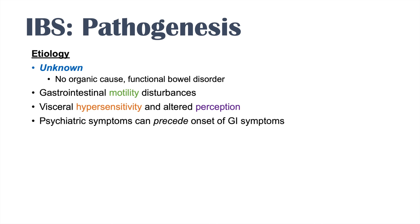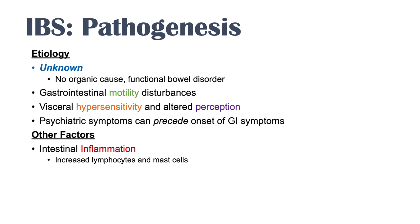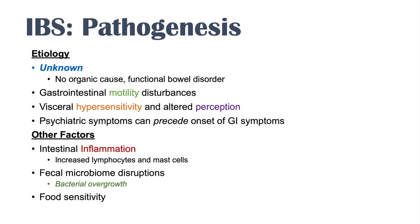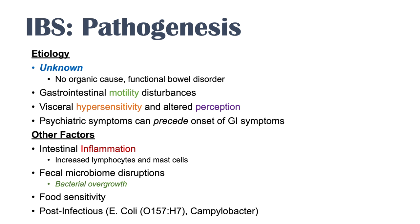Other factors likely responsible for the onset and exacerbation of IBS include intestinal inflammation. IBS patients have been found to have increased lymphocytes and mast cells within their gastrointestinal system. There are also disruptions in the fecal microbiome, with bacterial overgrowth and imbalanced species. There's also likely some sensitivity to certain foods and nutrients, and there is something called post-infectious IBS — individuals previously infected with E. coli O157H7 and Campylobacter bacteria can develop IBS symptoms after infection.